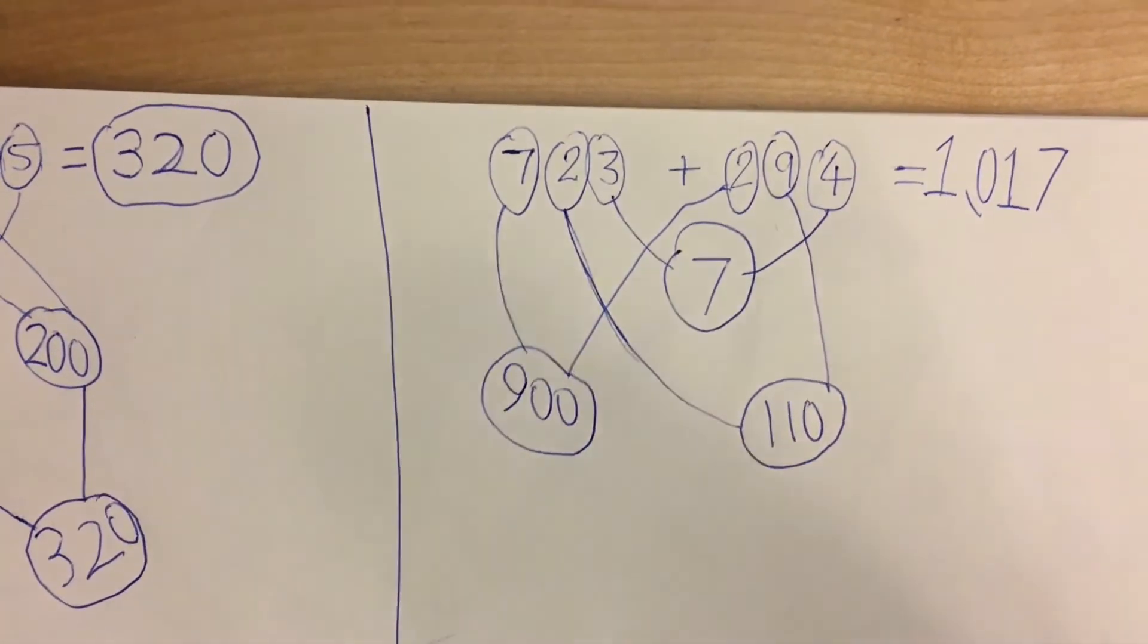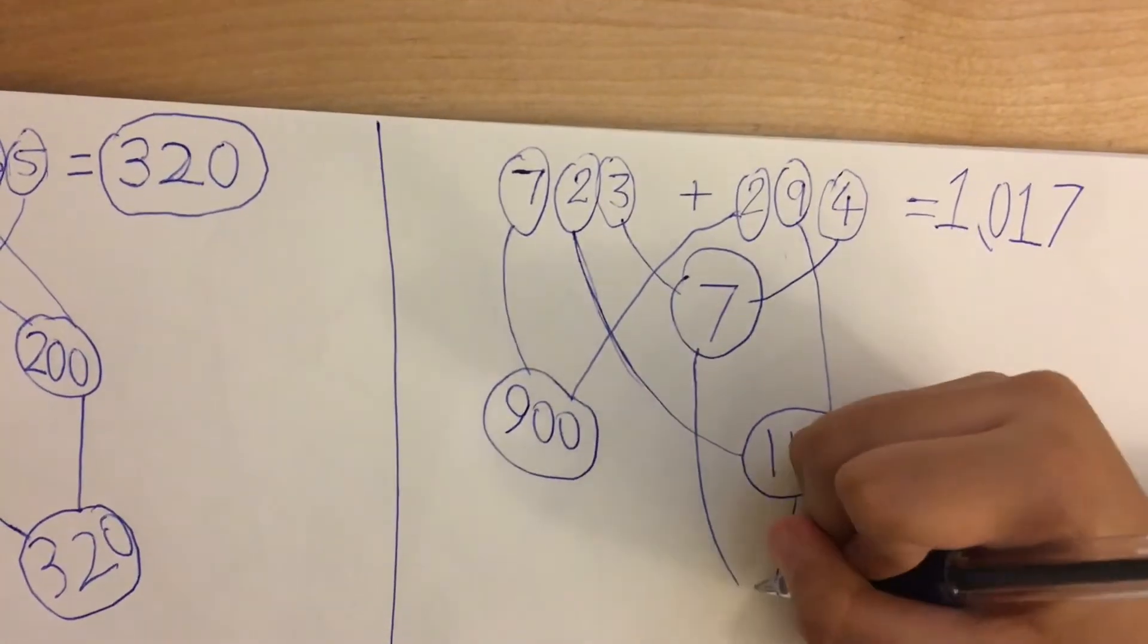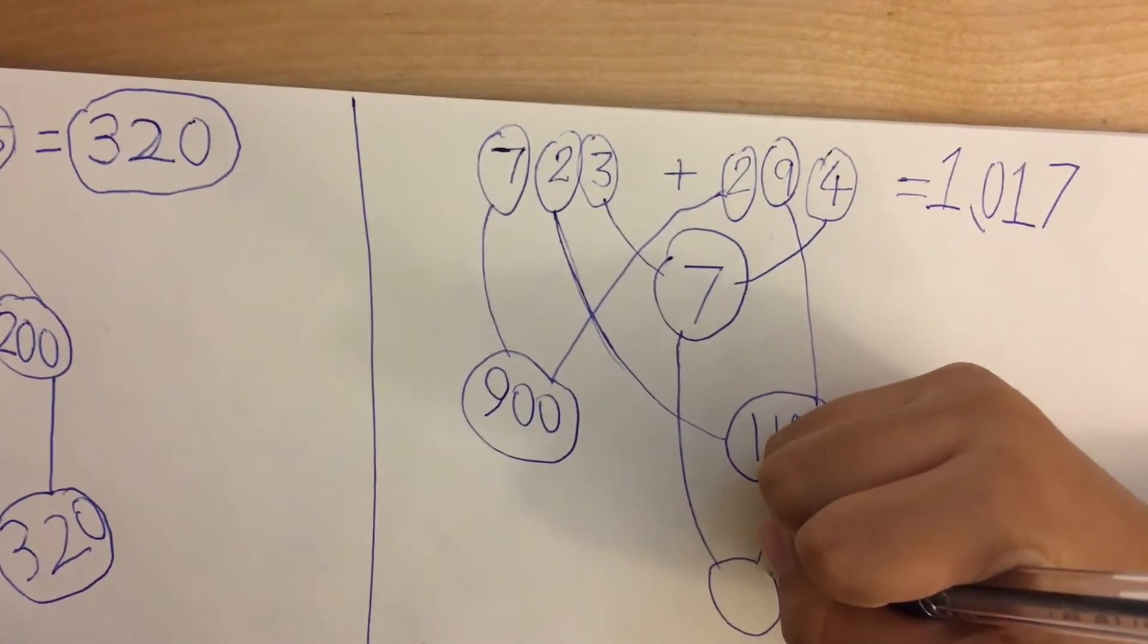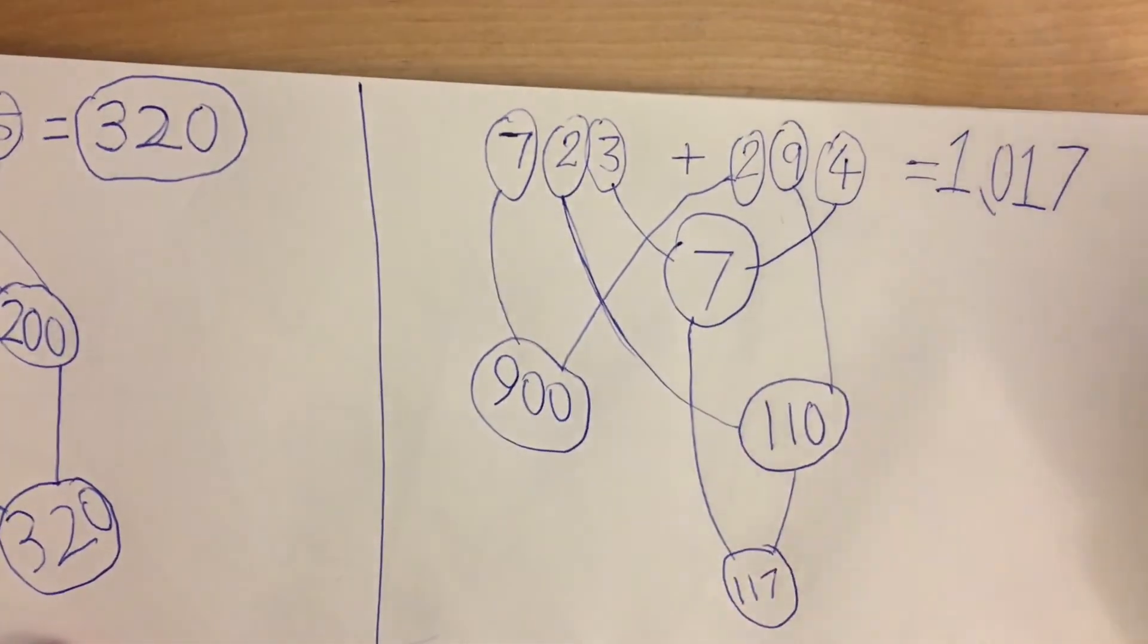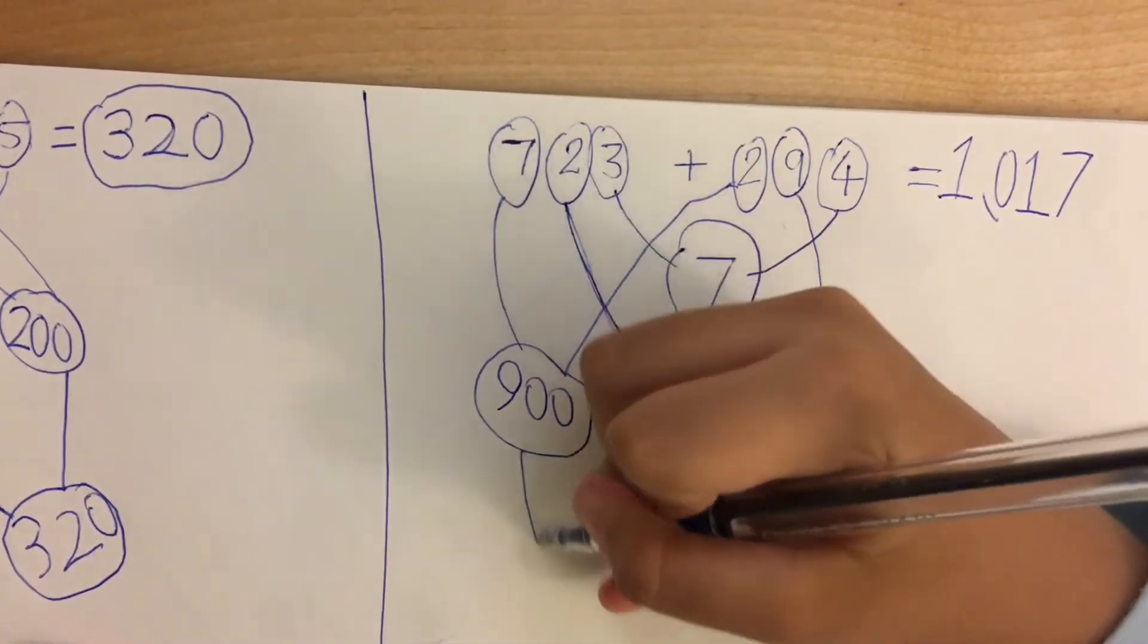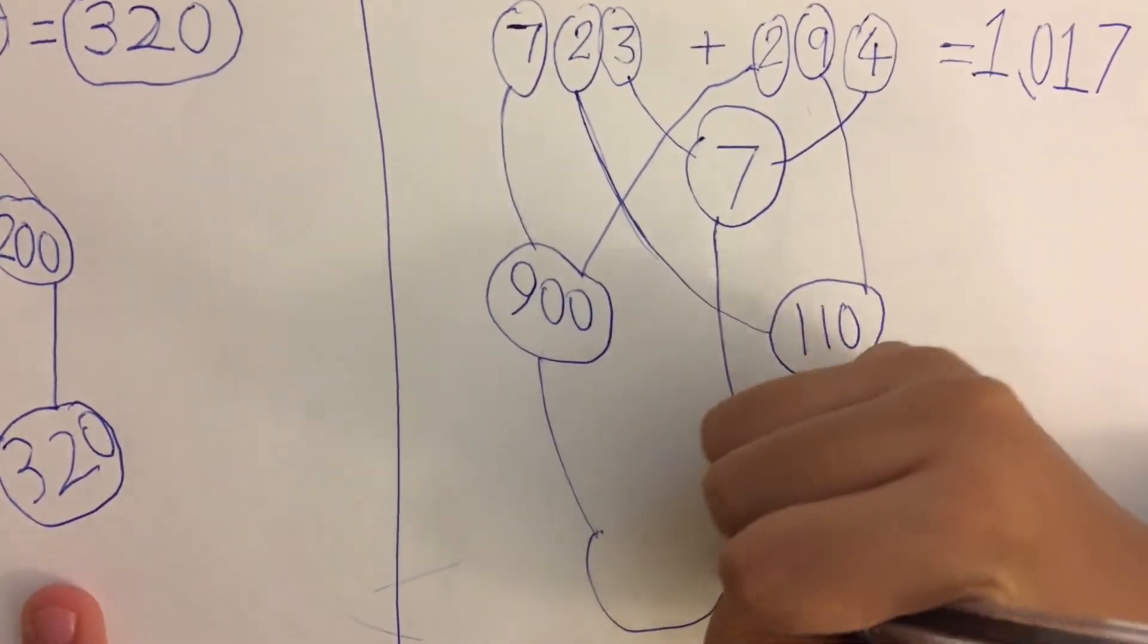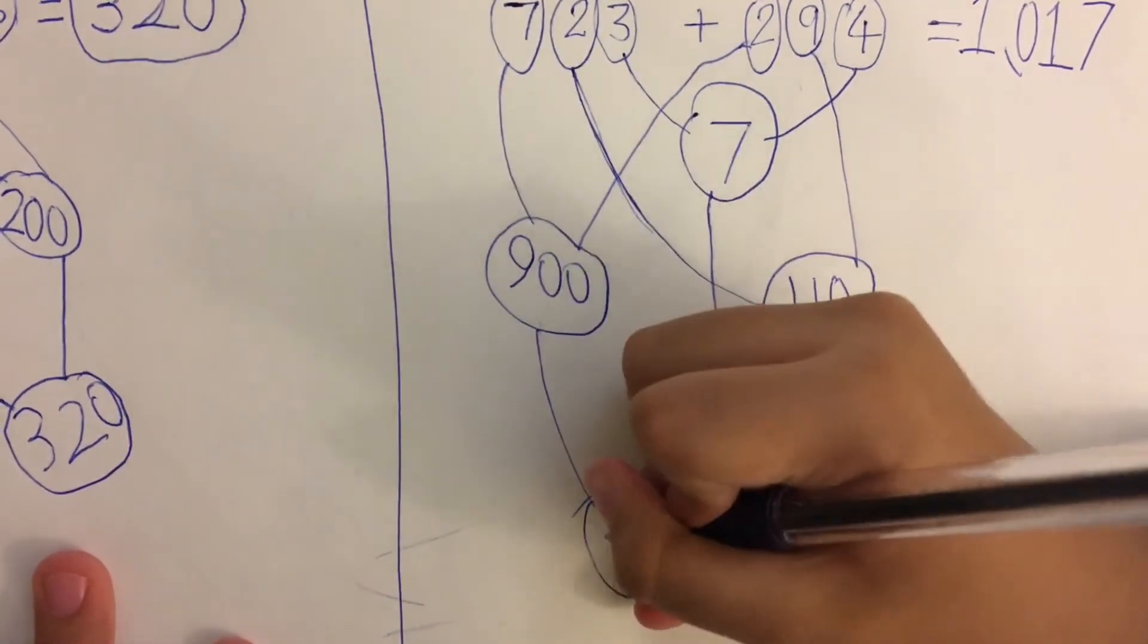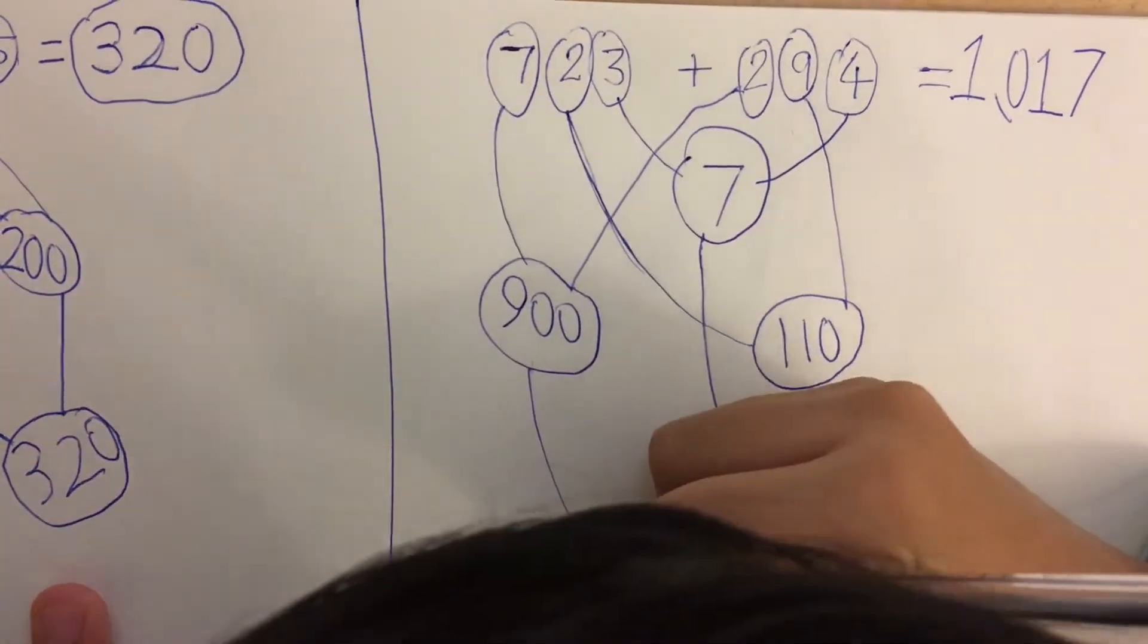Now we put the 7 and 110 together, you get 117. Then you add the 900 to it, and you get 1017.